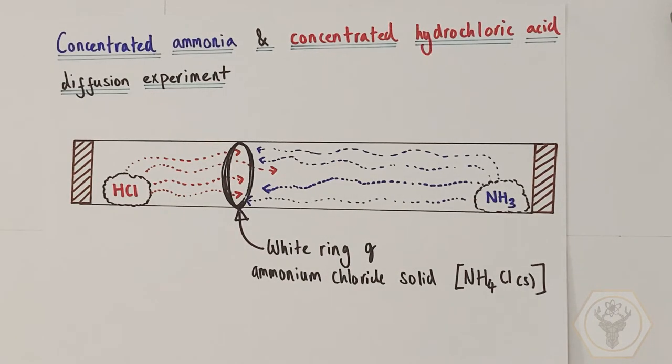So where they meet, they form a smoky ring appearance. This is actually a solid, fine powder of a product of this acid-base reaction, which is ammonium chloride salt, NH4Cl solid. But it appears to look like a smoky white ring where the two reactants have met.